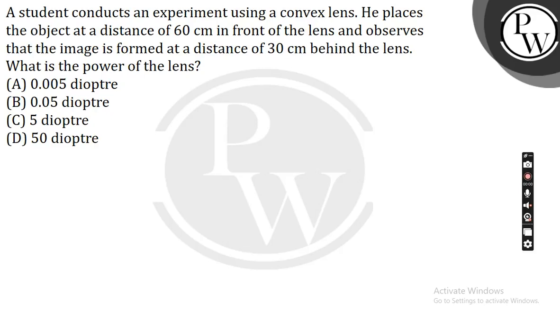A student conducts an experiment using a convex lens. He places the object at a distance of 60 cm in front of the lens and observes that the image is formed at a distance of 30 cm behind the lens.